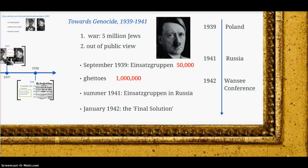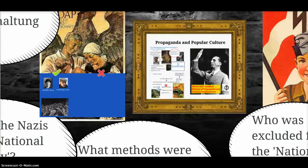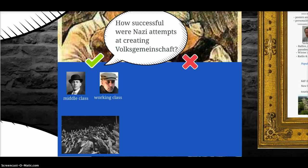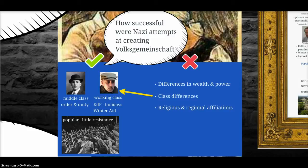A cumulative total of around 6 million Jewish people were murdered. How successful were Nazi attempts at creating a Volksgemeinschaft? In some ways, yes — some in the middle class liked the apparent order and unity; some in the working class appreciated the free holidays; poorer people appreciated the winter aid; and Hitler was generally quite popular throughout the late 1930s, with not much organised resistance. On the other hand, differences in wealth and power persisted within Germany, as did class differences and regional differences. And the persecution of Jews and other minorities in Germany was not particularly popular with most Germans.